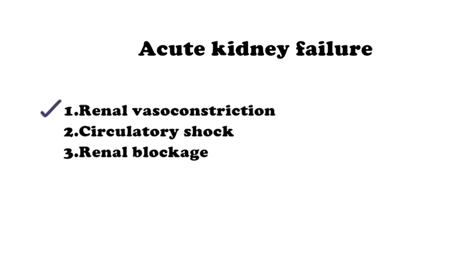This acute kidney failure happens due to renal vasoconstriction, circulatory shock, and renal blockage. Renal vasoconstriction takes place because of toxic substances released from the antigen-antibody reaction. Circulatory shock is caused by a huge loss of circulating RBCs, and excess released hemoglobin blocks the renal tubules.